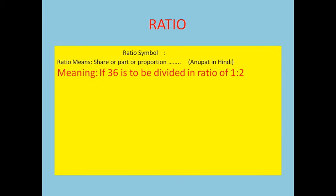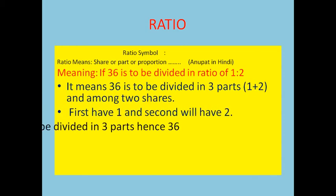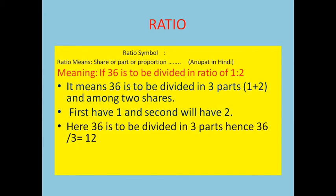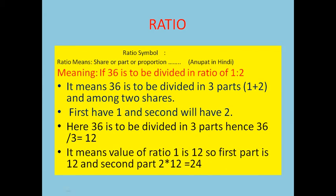So friends, if 36 is to be divided in the ratio of 1 is to 2, what are we doing? We are actually dividing the ratio into three parts. Here 36 is to be divided in 1 is to 2, so we are dividing into three parts — 1 and 2 — making three parts total.